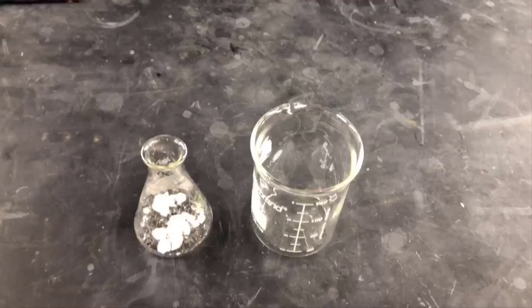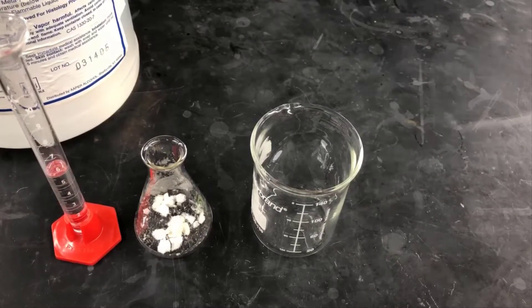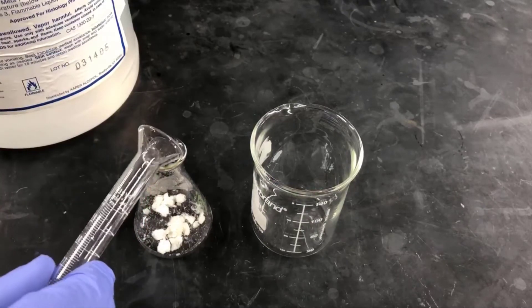To start off with, I'll be measuring out 6 milliliters of xylene and pouring that in. This is the good solvent, and adding 6 milliliters of xylene nearly dissolves the product.